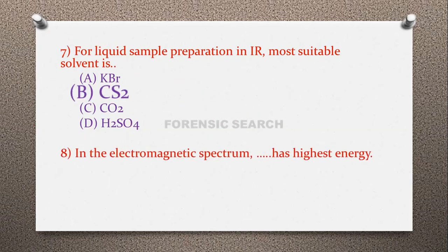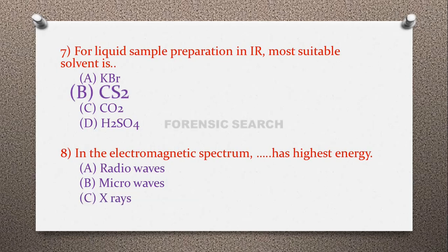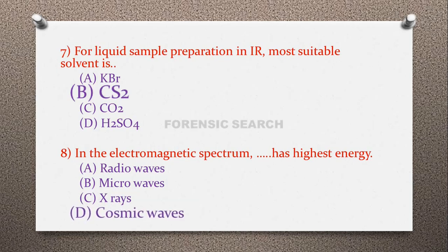Question 8: In the electromagnetic spectrum, which has the highest energy? Option A: radio waves, option B: microwaves, option C: X-rays, option D: cosmic waves. The correct answer is option D — cosmic waves have the highest energy in the electromagnetic spectrum.